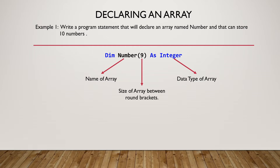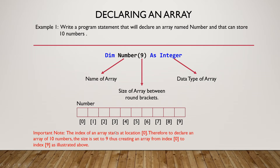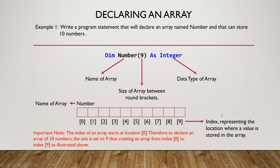It should be noted that the data type can also be Double, Char, String, or Boolean as per the syllabus. The data structure of the array has 10 locations starting from 0 to 9. Important note: the index of an array starts at location 0. Therefore, to declare an array of 10 numbers, the size is set to 9, creating an array from index 0 to index 9. The index represents the location where a value is stored in the array.